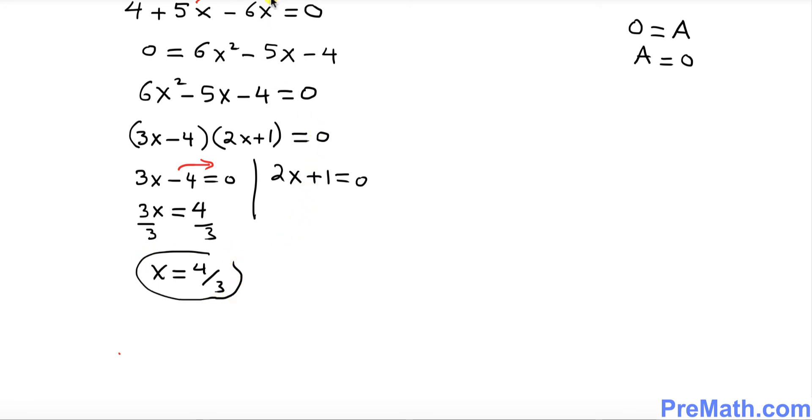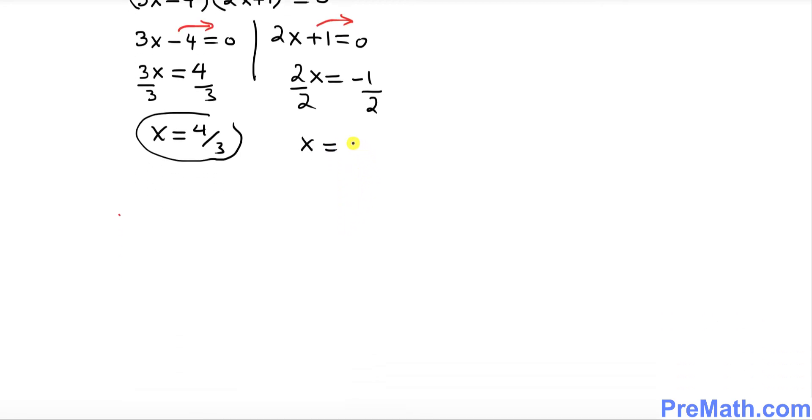Let's do this one over here on the right hand side. Move this 1 to the other side, so that's going to become negative 1 when you drag it to the other side. Negative 1 divided by 2, so x turns out to be negative 1 over 2 as another solution.